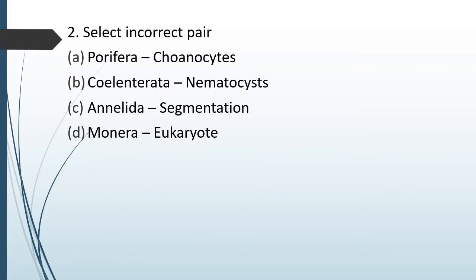Question No. 73: Select the incorrect pair. Option A: Porifera, Choanocyte. Option B: Coelenterates, Nematocytes. Option C: Annelida, Segmentation. Option D: Monera, Eukaryote.